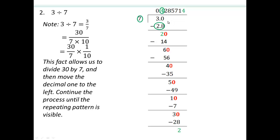Whether I write 3.0 or 3.0000, I can put as many zeros as I want, because the zeros after the decimal point don't change the number 3. So I can pretend there's a 0 here — it's as if there was 300. If I had 300, then I would just multiply by 1 over 100, so this is in the hundredths place. Now I can keep going: 7 times 2 is 14, and this difference is going to be 6.